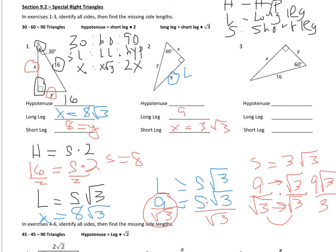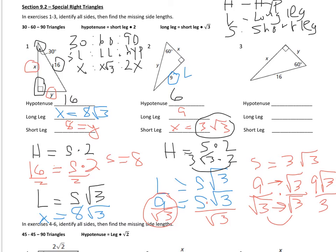We already know the long leg is 9. Now we find the hypotenuse: it equals the short leg times 2. The short leg is 3√3, so the hypotenuse equals 3√3 × 2, which is 6 times the square root of 3.